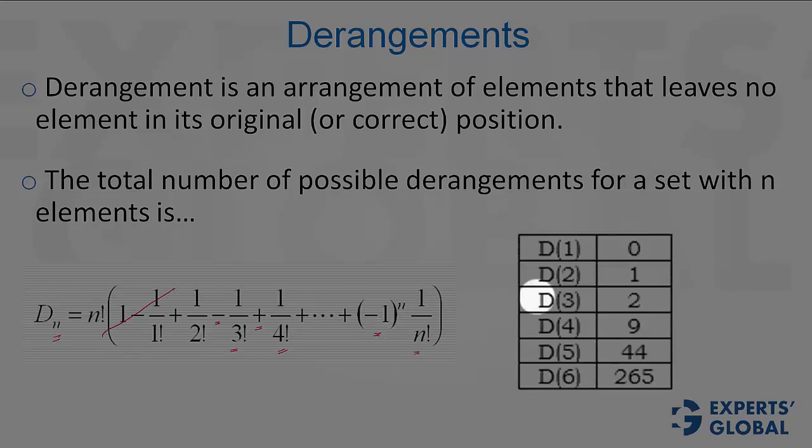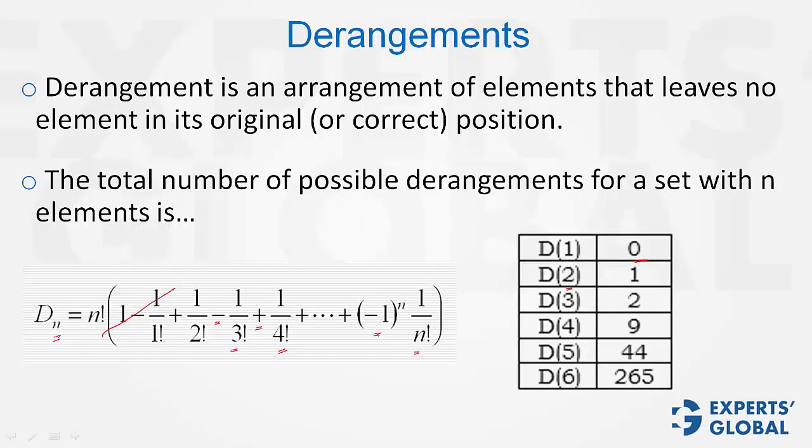And now, here is a grid for values. Imagine if there's only one object, it cannot be deranged. Therefore, zero ways of deranging one object. If there are two objects, imagine a, b, a, b, there's only one way of derangement that they take each other's position. So, only one way.